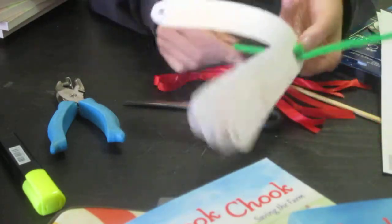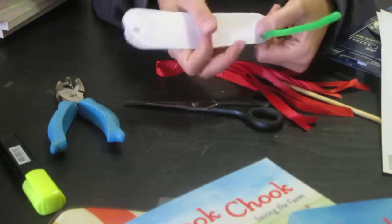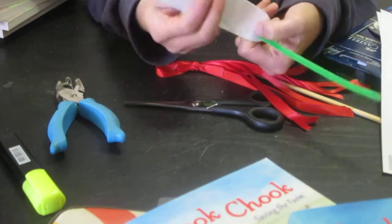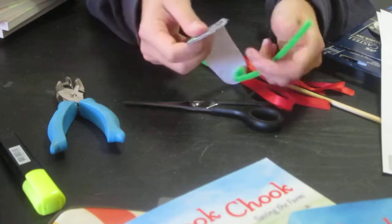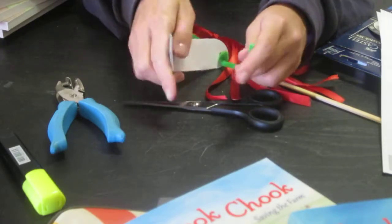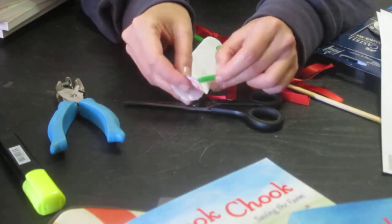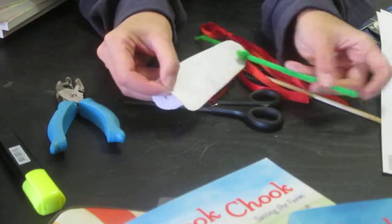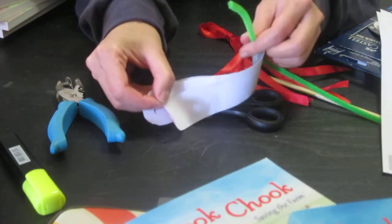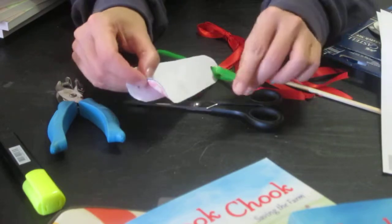So once you've done that and you've got all your pages stacked, you're going to gently fold, bend them over, and then what you're going to do is thread the other hole through the other side of the pipe cleaner. So first we threaded it through this side, now we're going to thread it through this side.